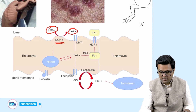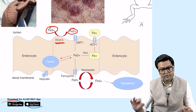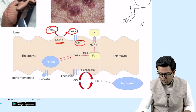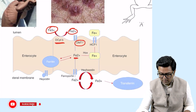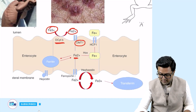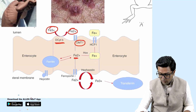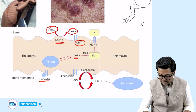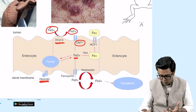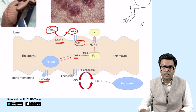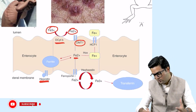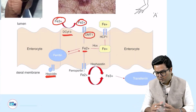Because vitamin C is a reducing agent, it gives a positive Benedict's test. The Fe2+ formed is absorbed via divalent metal ion transporter (DMT1), can be stored as ferritin, and exits into the blood via ferroportin. Ferroportin is inhibited by hepcidin, a liver protein that controls iron absorption.